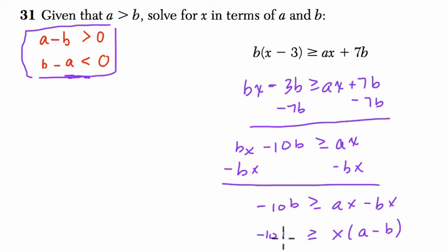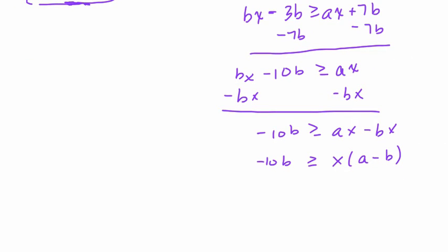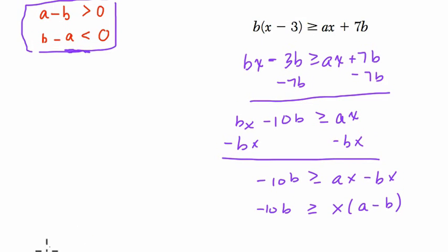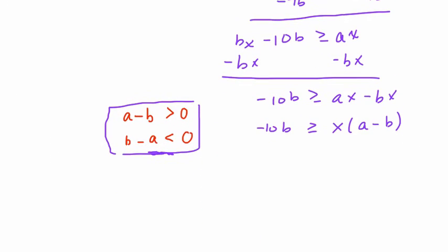All right. And now we've got to solve for x. And let me just bring down what we wrote before so we can see that and talk about its significance here. Okay. So now we want to solve for x. So to solve for x, we just divide both sides by a minus b. Right? Like this. Okay.